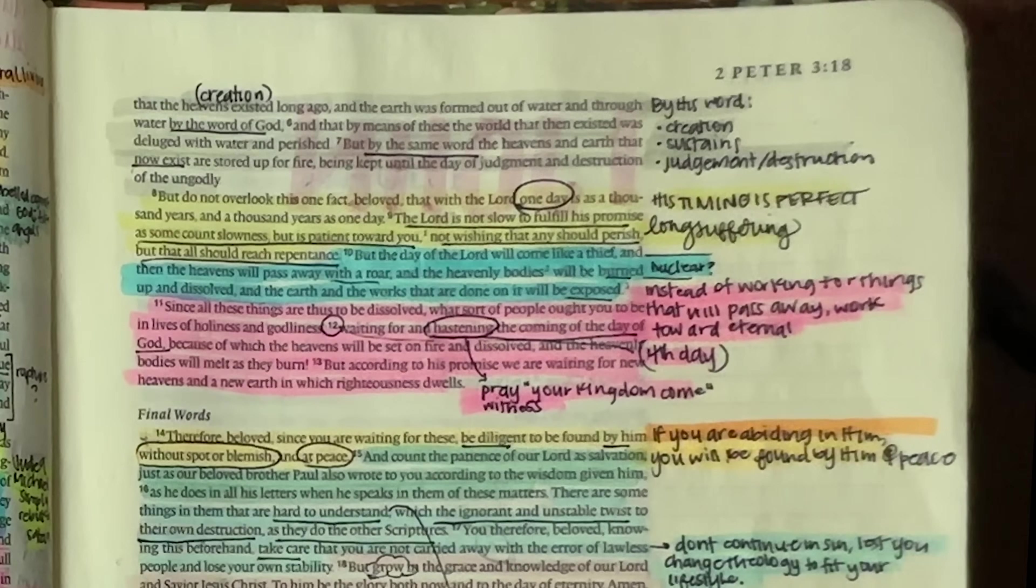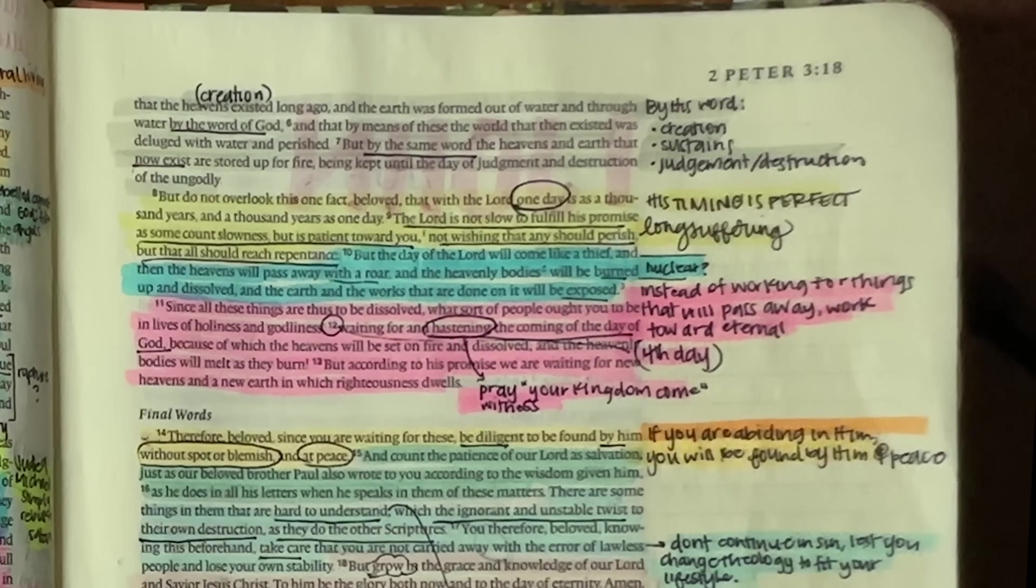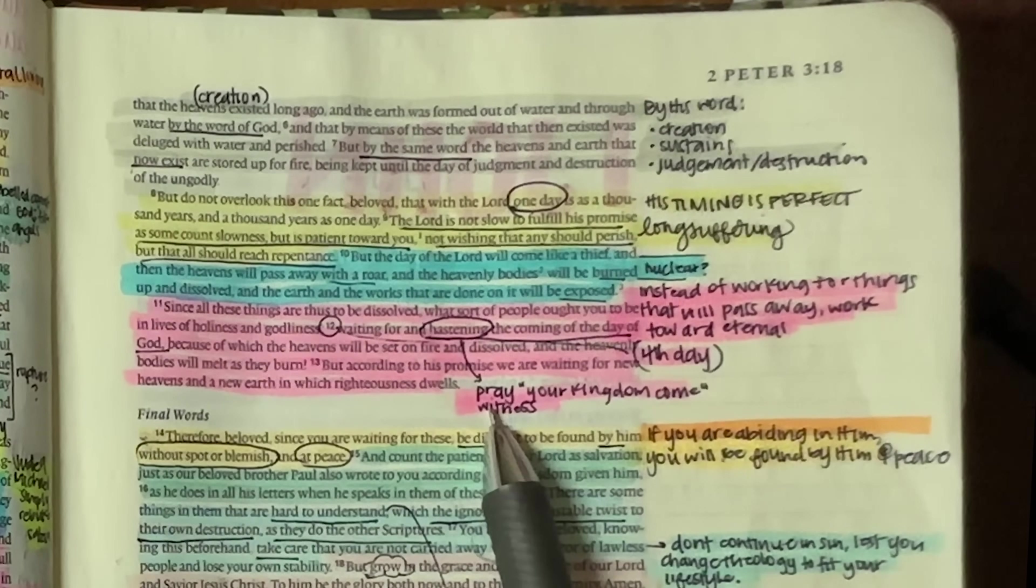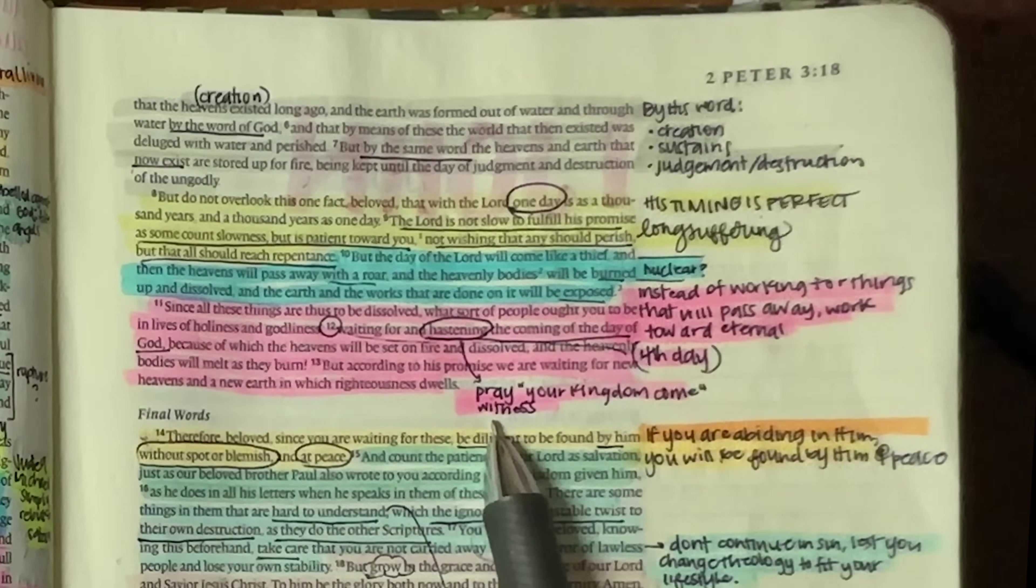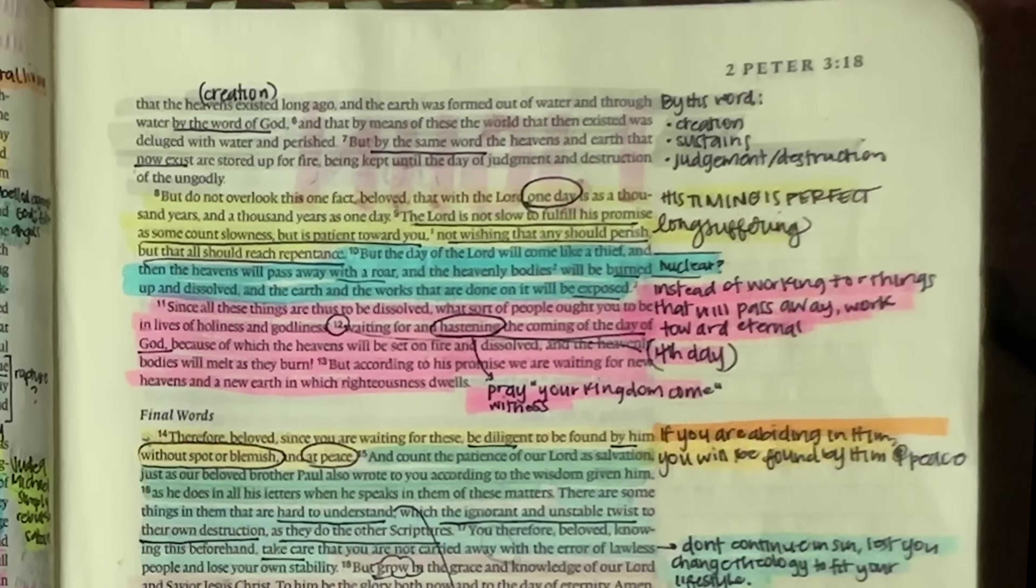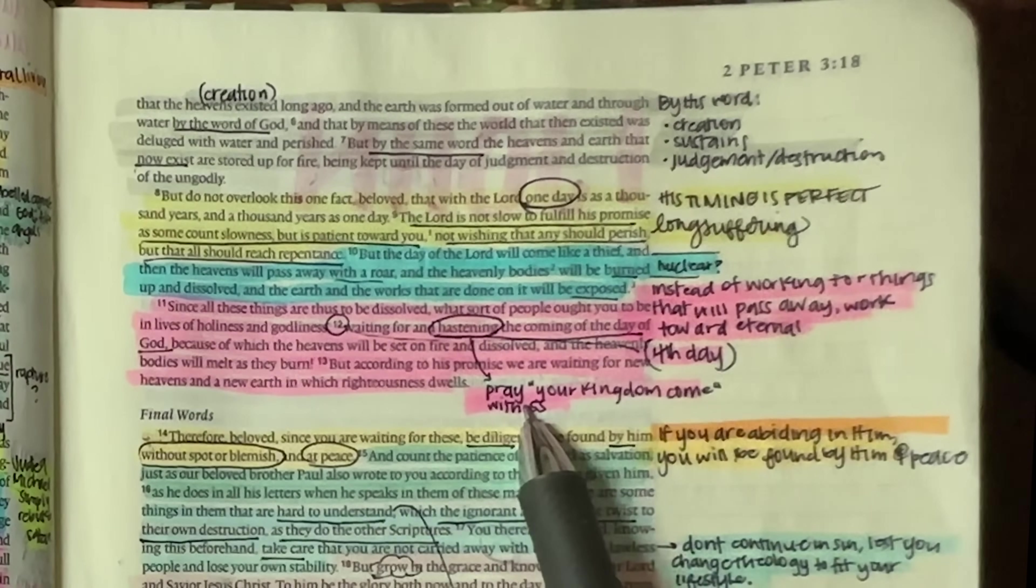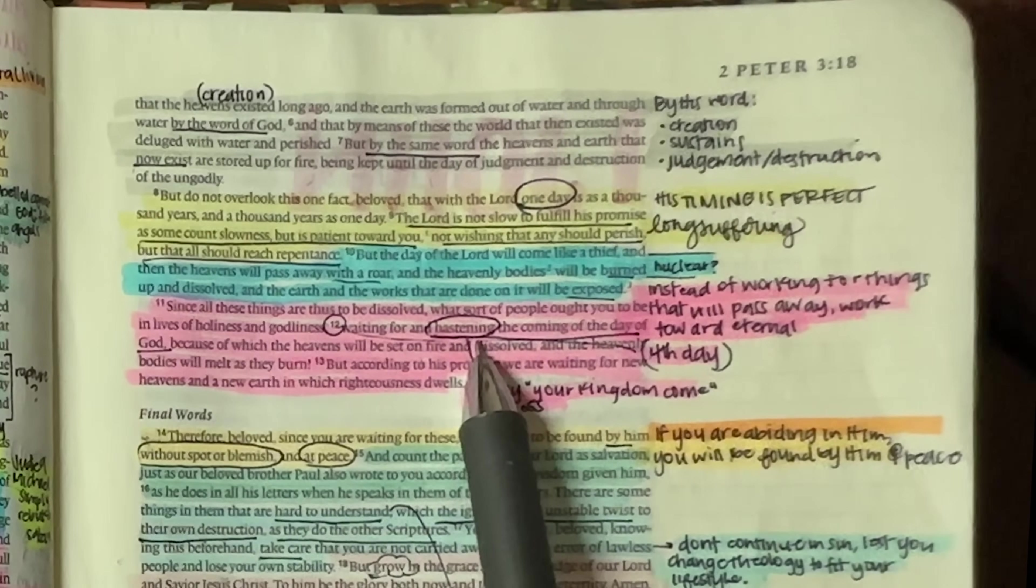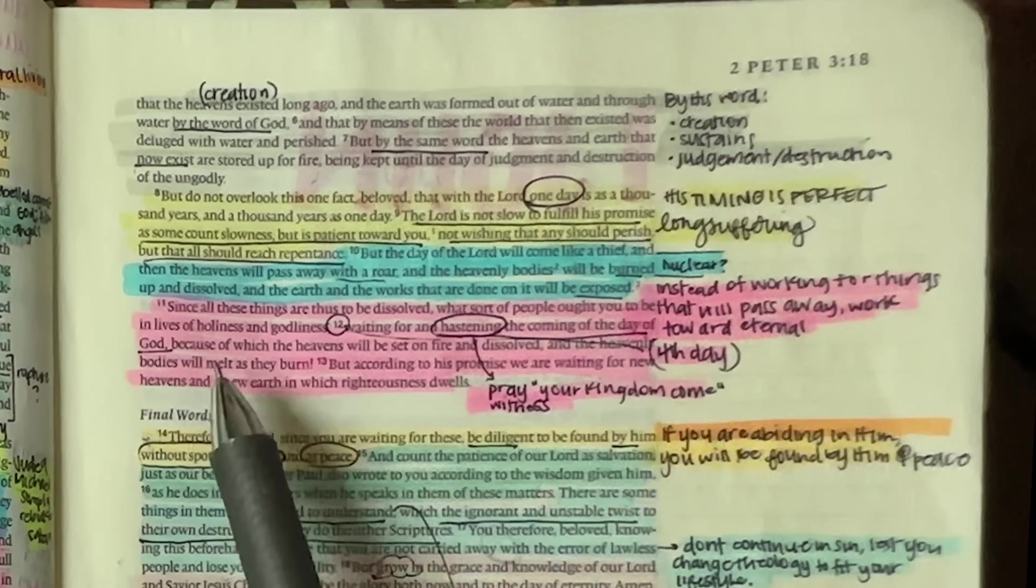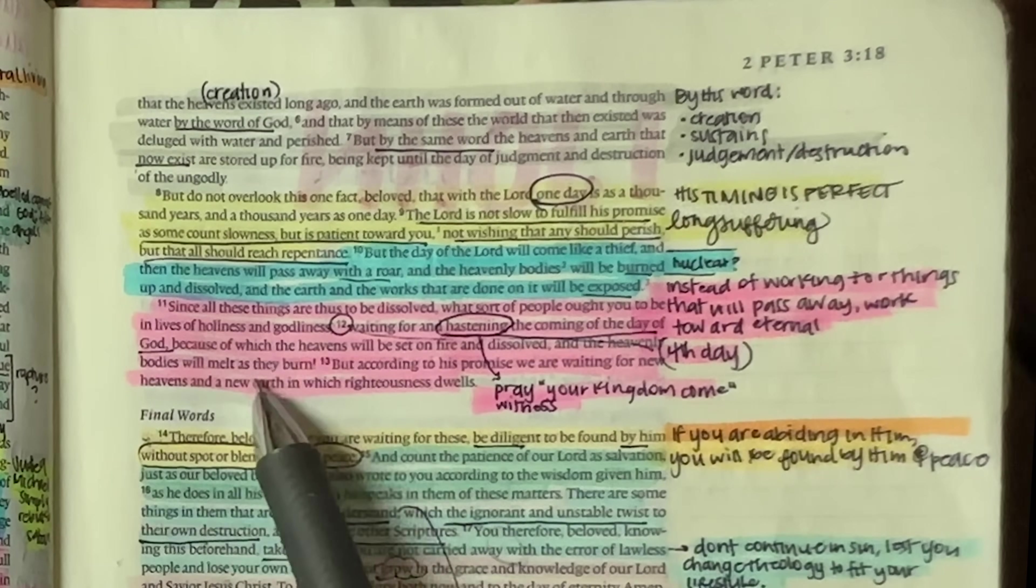God knows what those prayers are before we ever even speak them, but they all play a part in whatever happens on this earth. So we should be people who are praying, Lord, your kingdom come. You know, we also are witness to the fact that these things are going to happen, that all of this prophetic word was fulfilled and that these prophecies are still yet to come. So we should be witnessing so that we can get people saved because remember he's waiting for that last person to get saved before he comes back. Because of which the heavens will be set on fire and dissolved and the heavenly bodies will melt as they burn.